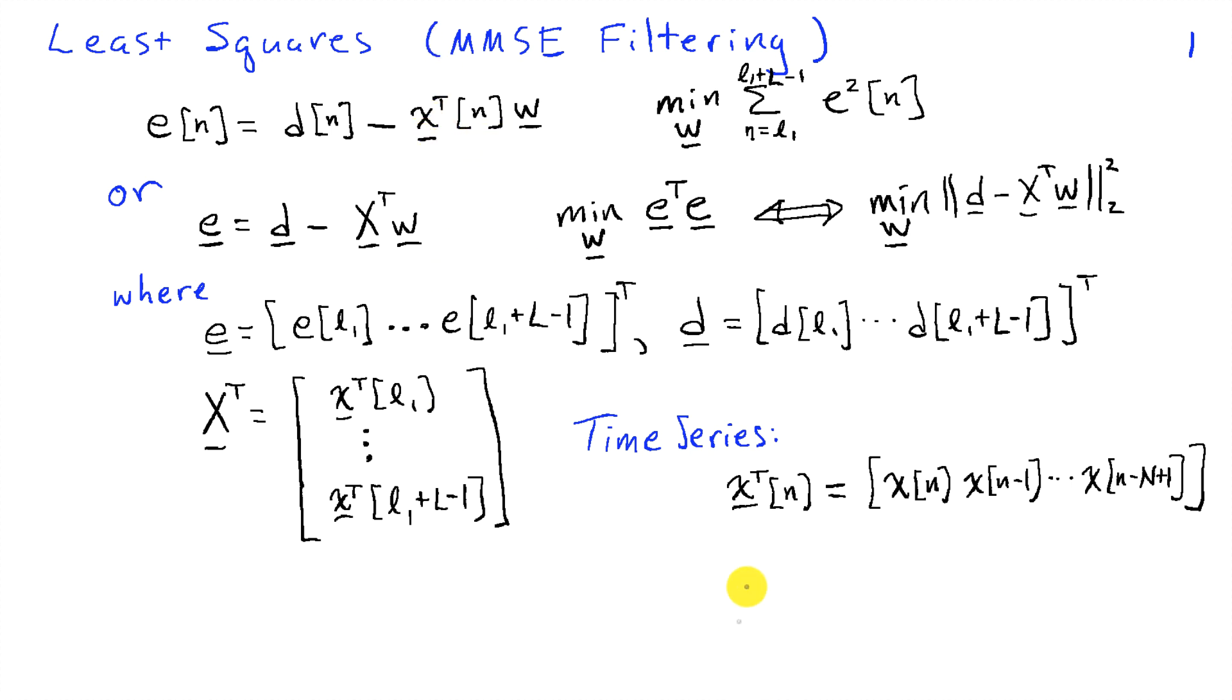In the time series case, the x transpose vectors are just past samples up to capital N of them of the input time series. But in general, these can just be rows of a matrix if we're trying to solve a least squares problem. So it works for the time series, and if you interpret these x's as rows of a matrix X, then it works for a general least squares problem.